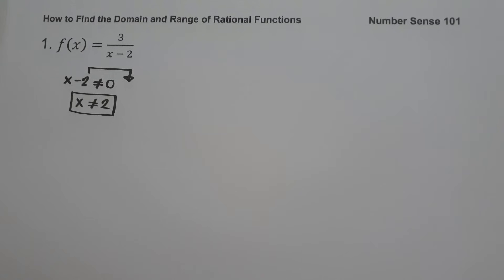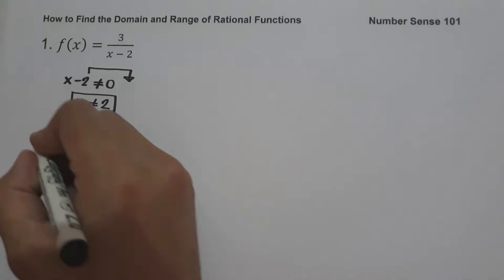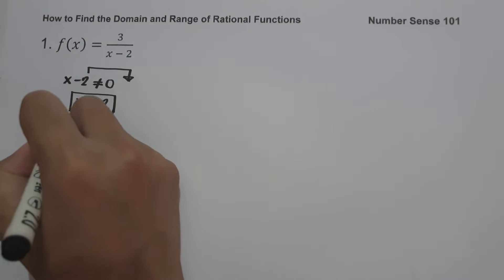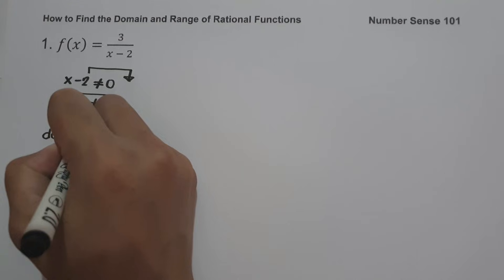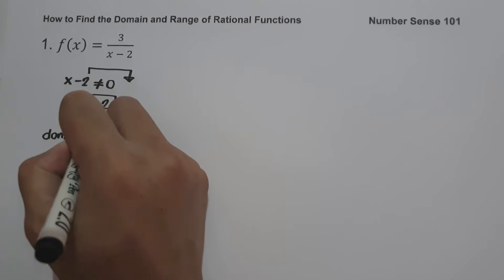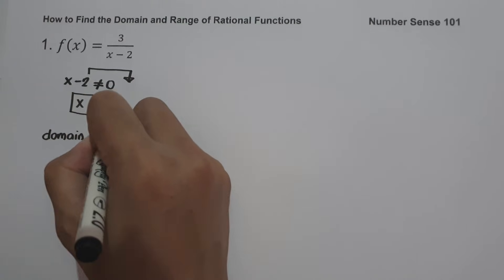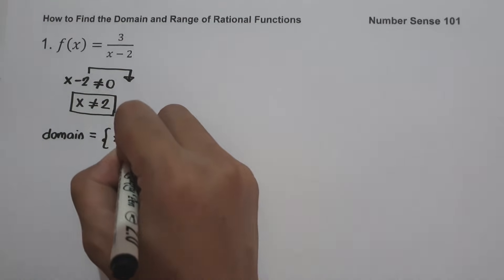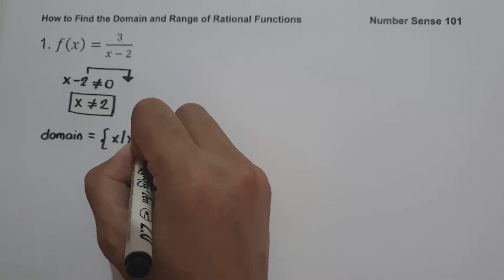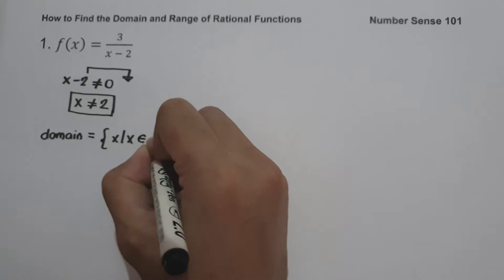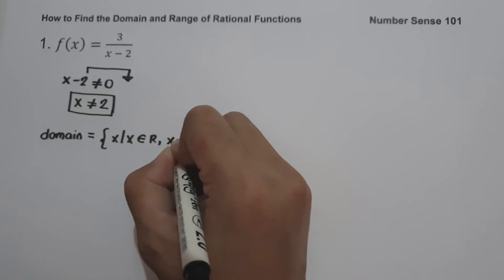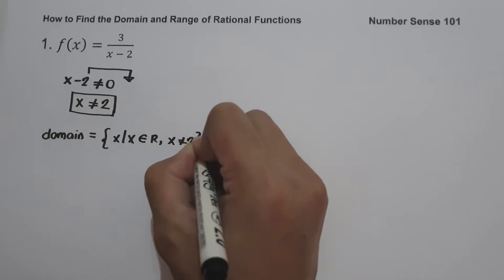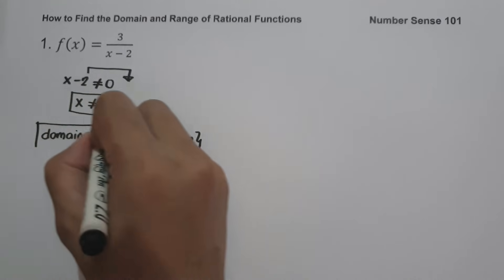So the domain of f(x) is the set of all real numbers except 2. In set builder notation: domain is the set of values of x such that x is the set of all real numbers except 2. And this will be our answer.